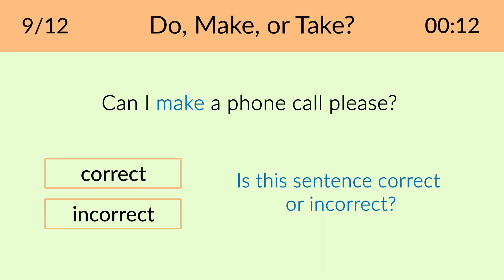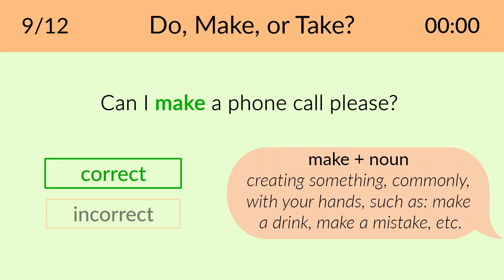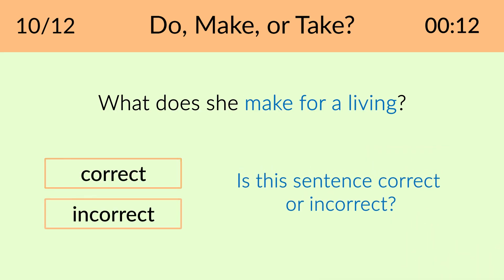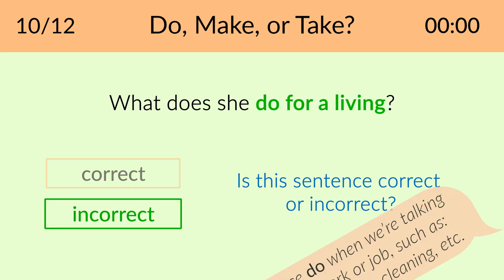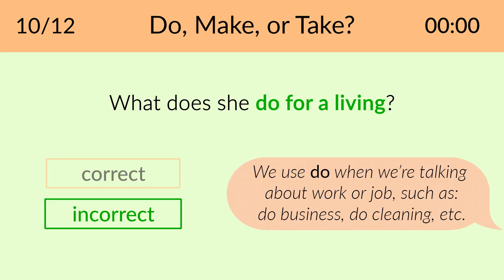This sentence is correct: Can I make a phone call, please? Make plus noun means creating something, commonly with your hands. The correct answer is: What does she do for a living? We use do when we're talking about work or job.